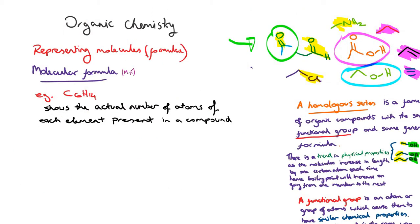The first way of representing molecules, we're going to talk about the molecular formula. That shows us the actual number of atoms of each element present in the compound. So, if the molecular formula is written as C6H14, that tells me there's six carbon atoms and there's 14 hydrogen atoms in the molecule. So, that's one way of representing the formula of a molecule. It's called the molecular formula.